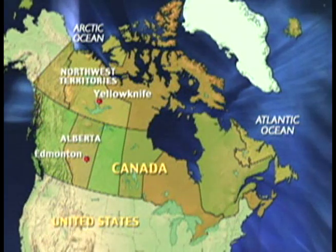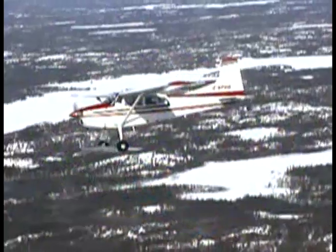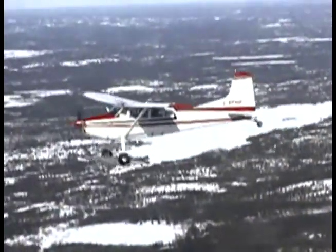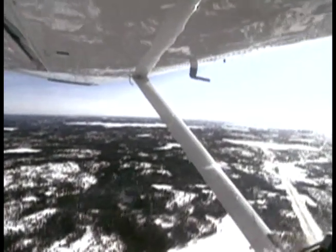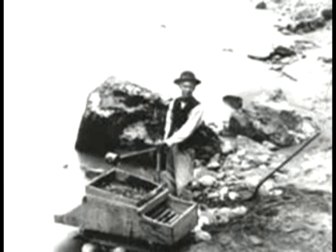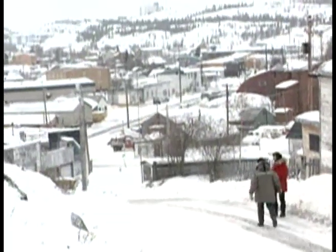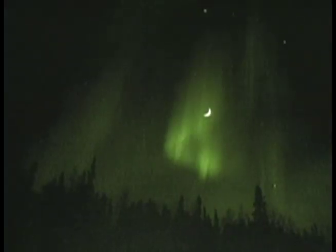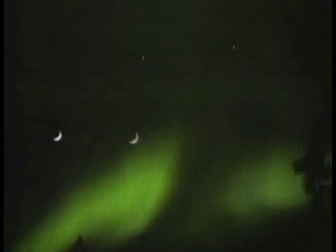Yellowknife is 900 miles from Edmonton, Alberta, the nearest big city. Today, the fastest way to get here is by plane. Yellowknife first attracted settlers in the early 1900s when gold was discovered. It still has the feeling of a frontier town. Here, the sky often puts on a spectacular show — the aurora borealis, or northern lights — which seem to come straight from the realms of science fiction.